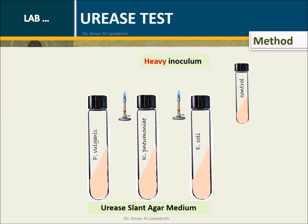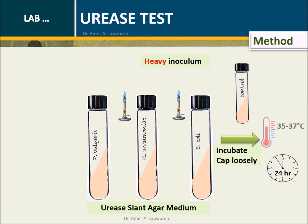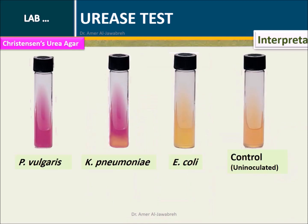Leave one slant un-inoculated as a negative control. Incubate for 24 hours at 35 to 37 degrees centigrade. Cap loosely to allow oxygen in, to start the splitting of urea by urease.